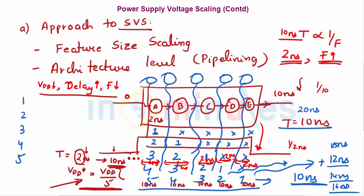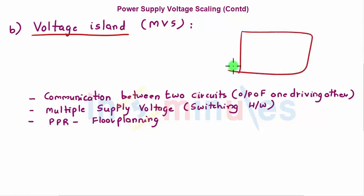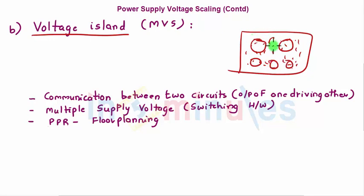The next technique is multi-level voltage scaling, where we create voltage islands. Consider an IC or a block with many sub-blocks. We create islands of different voltages — for example, 1.1 V, 1.3 V, 1.6 V, 0.9 V, and so on. Similarly, we partition the circuit into small islands of circuits. These circuit islands can operate at different voltages at different instances of time.